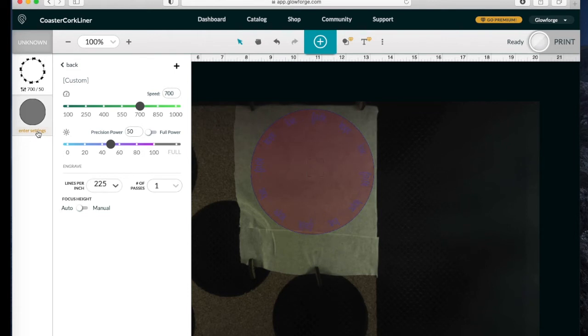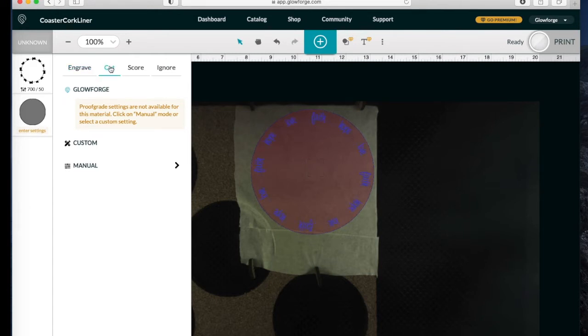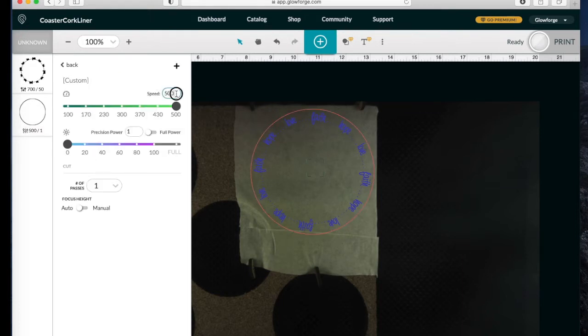Now I need to enter the settings for my circle. This is going to be my cut layer, so I'll click on Enter Settings and I'll let Glowforge know I want to cut. Once again, I go down here to Manual, and my cut is going to be a speed of 200 and a power of full. One pass is enough, and I have my machine set on auto focus height.